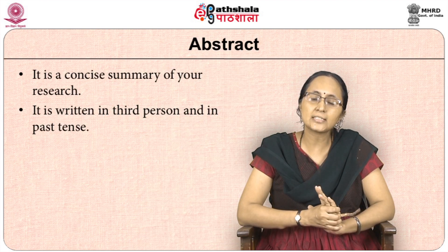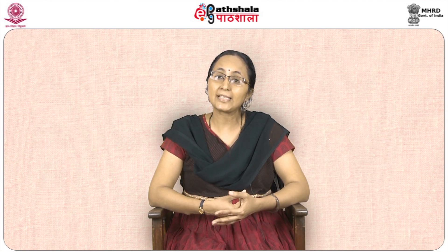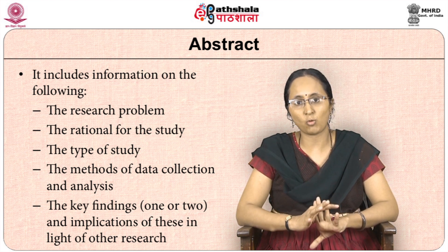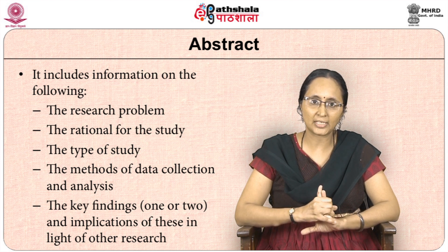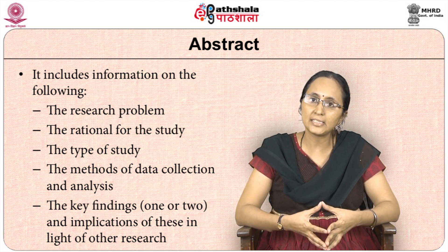Now we come to the abstract. Your abstract is a concise summary of your research. It is always written in third person and in past tense because it is a factual account of completed research. The best time to write the abstract is at the end of your entire research report. The length is between 150 and 300 words depending on the length of your report. The abstract should cover the research problem, the rationale, the type of study, the methods of data collection and analysis, and the key findings and their implications.